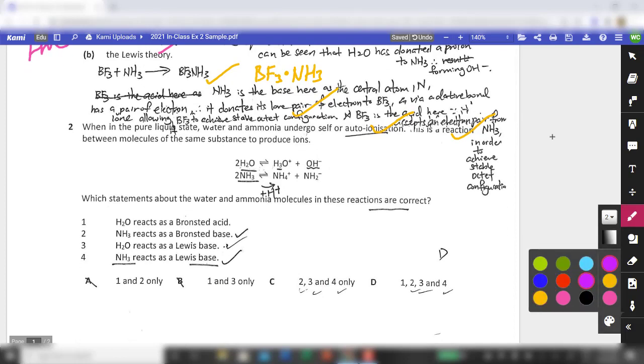Then the next part we'll be looking at will be question 2. So for question 2, it's mentioned that in the pure liquid states, water and ammonia undergoes auto-ionization. So this is a reaction between a molecule in the same substance to produce ions. So if you just look at these two equations, let's call them equation A and equation B. So if you notice, for equation A, the water acts as both the electron- you can look at it from the perspective of a Bronsted acid or Bronsted base. It doesn't really matter. So in this case, you notice that water itself donates a proton. So one water molecule donates a proton to another water molecule. That's why you are able to produce H3O+ and OH-.